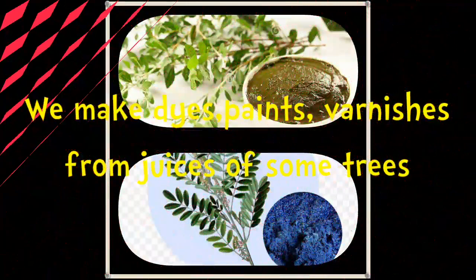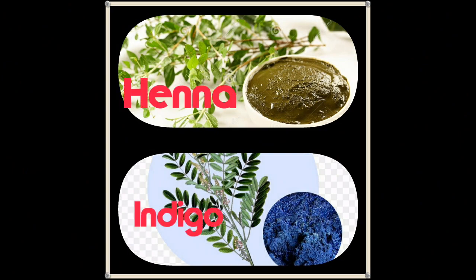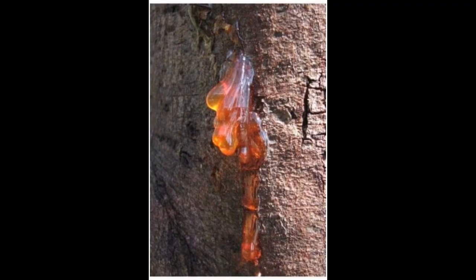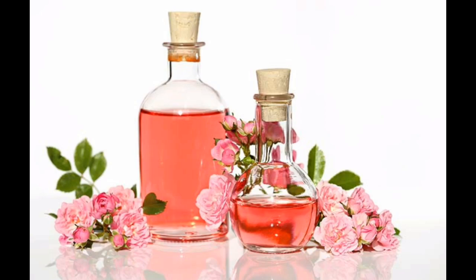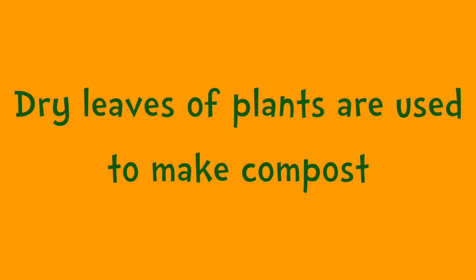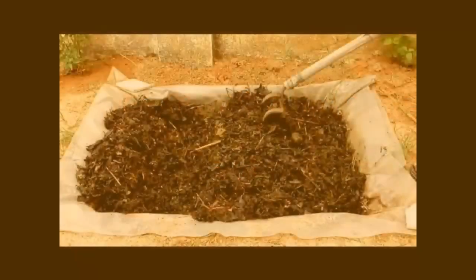We get dyes from plants like henna and indigo. We get things like rubber and gum from plants. Flowers of plants like rose and jasmine are used to make perfumes.